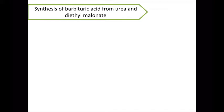Many barbiturates are available globally in the market. Among them, some that are frequently used in the treatment of epilepsy as well as for sedative activity are amobarbital, butobarbital, pentobarbital, and secobarbital. If these barbiturates are given in a high dose, they produce poisoning. The side effects of barbiturates are severe — they can lead to coma, with initial side effects including dizziness and sedation.